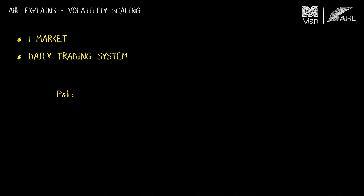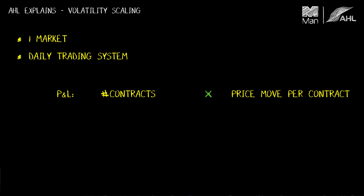The P&L is going to be proportional to the number of contracts that I hold, and I need to multiply that by the price move per contract. I don't know what the price move per contract is going to be over the next 24 hours — it hasn't happened yet. But the typical size of the price move is going to be proportional to the volatility of the market. That's what volatility is: it tells you the typical size of price moves that are going to happen.